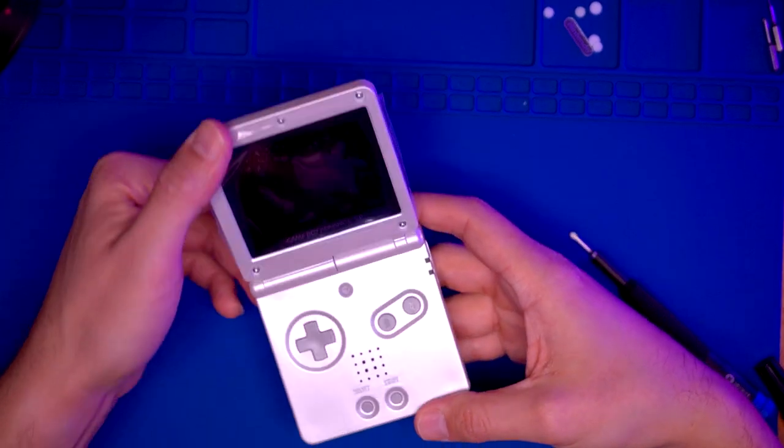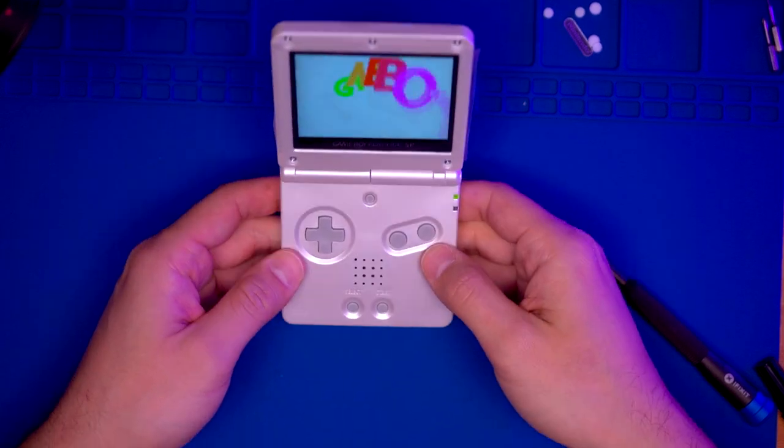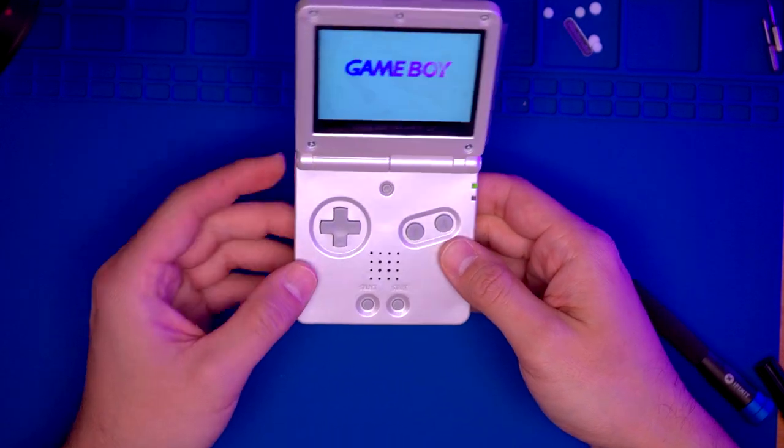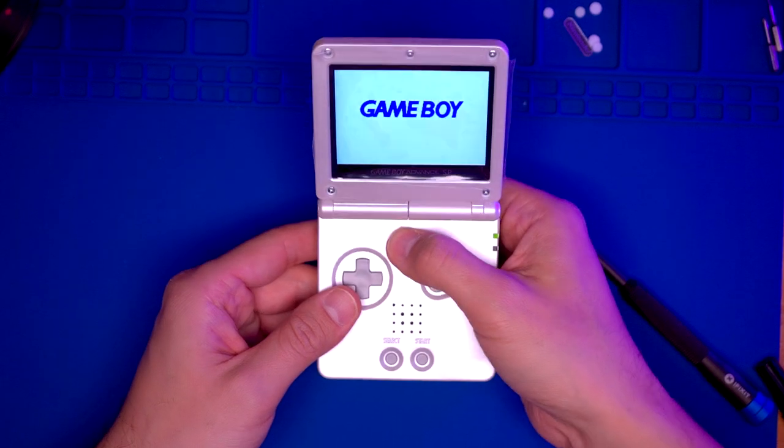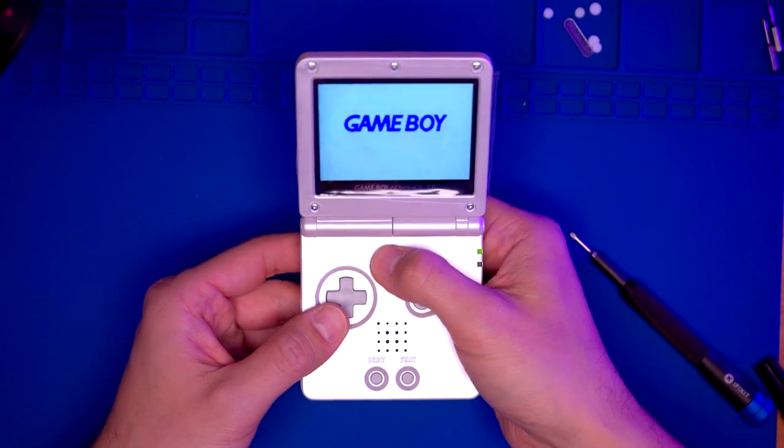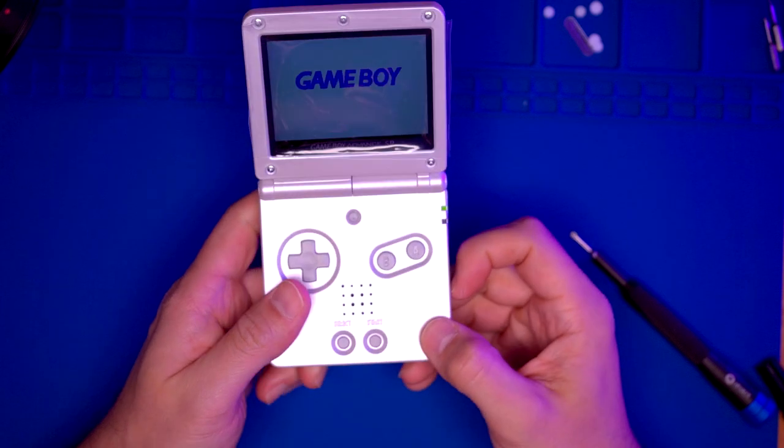Now we can put the battery in place and then the battery cover. We'll screw that in place with a Phillips bit. Let's give it a quick test here. Awesome, everything seems to be working. Volume is working and the brightness is working. We have a working modded Game Boy Advance SP.